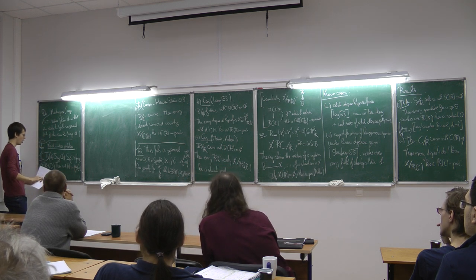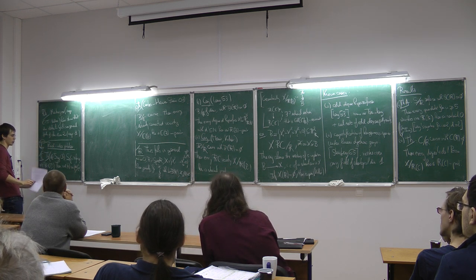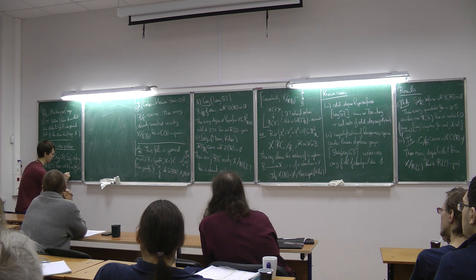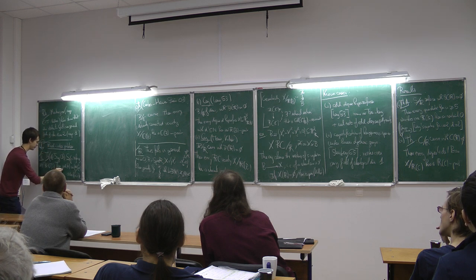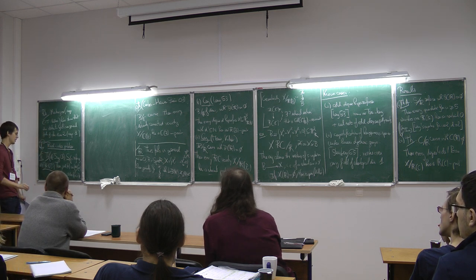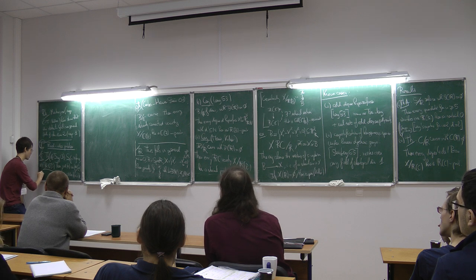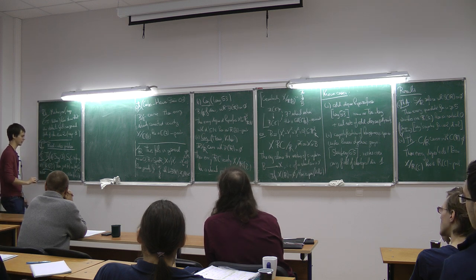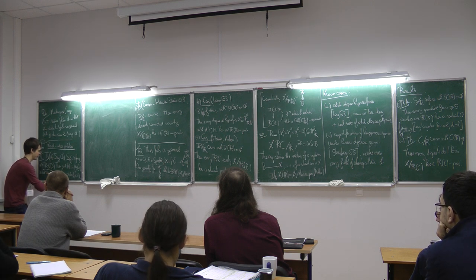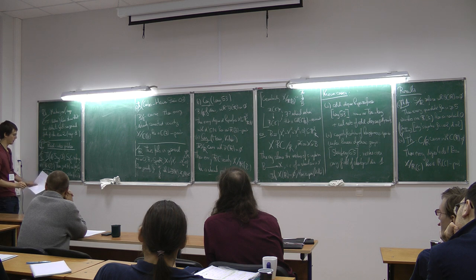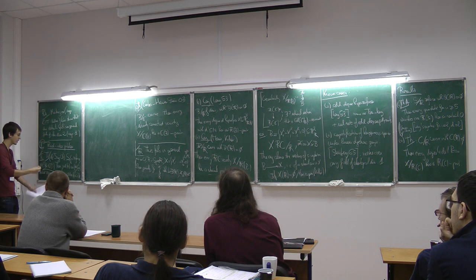Let me quickly recall what index and period are. The period is the easiest — it's the order of alpha in the Brauer group. The index is the smallest degree of finite extensions of my field that split the class.